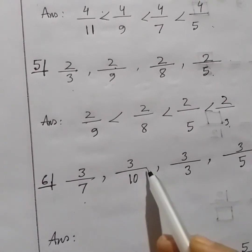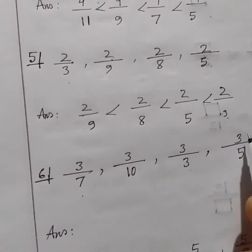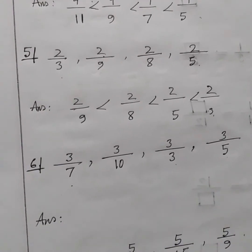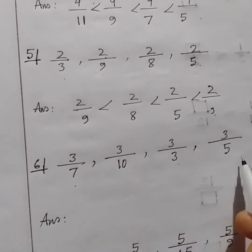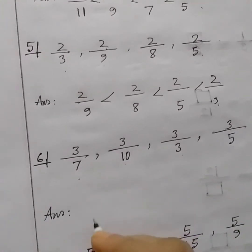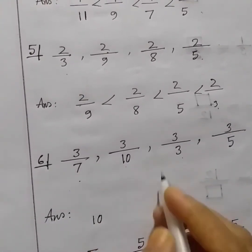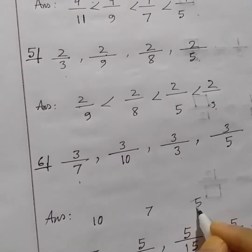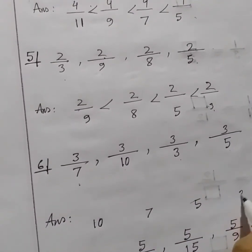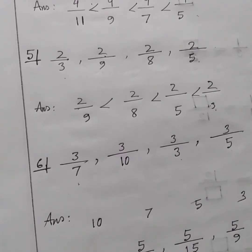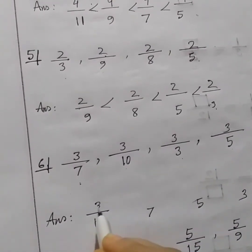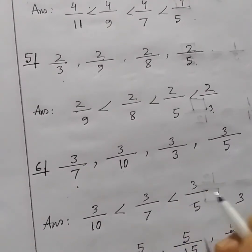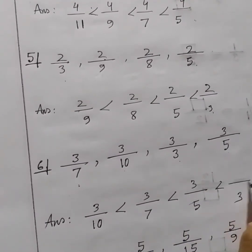Now try this one: 3 over 7, 3 over 10, 3 over 3, and 3 over 5. All the numerators are the same. So as before, we arrange the denominators from larger to smaller. Here 10 is the largest, then 7, then 5, and finally 3. So our answer will be: 3 over 10 is less than 3 over 7 is less than 3 over 5 is less than 3 over 3.